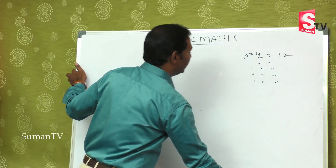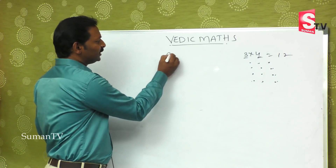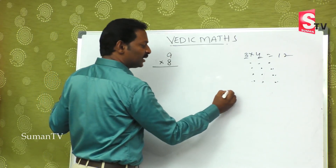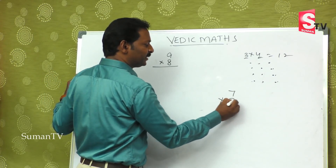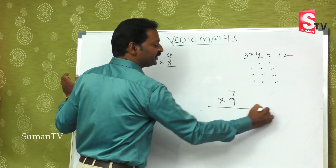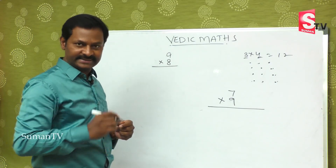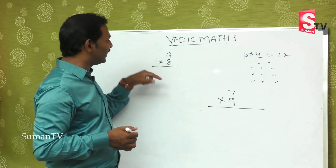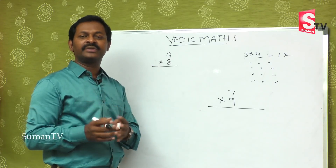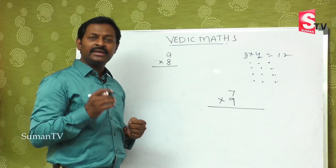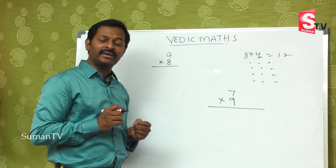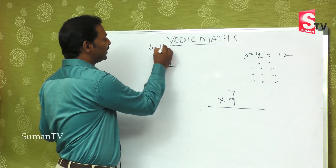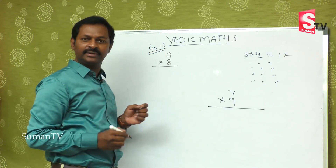First, I will start with a small number. Suppose 9 is multiplied by 8. If you look at the actual numbers — it's 9 and it's 8. Now, where does the base number come? It's 10.